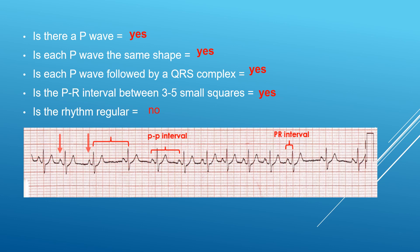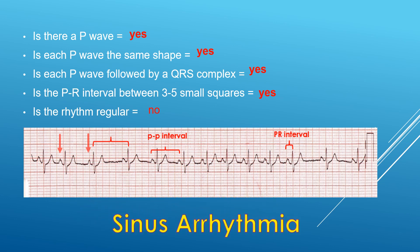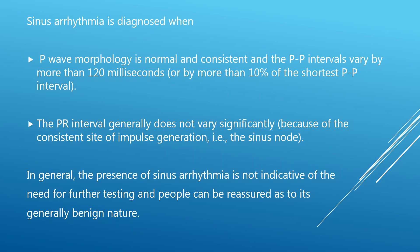If you find these parameters and features on the ECG, the most likely underlying diagnosis for this gentleman is sinus arrhythmia. Sinus arrhythmia is diagnosed when the P wave morphology is normal and consistent — sinus, sinus, sinus — and the PP intervals vary by more than 120 milliseconds. This gross variation in the PP interval must be present for this diagnosis.